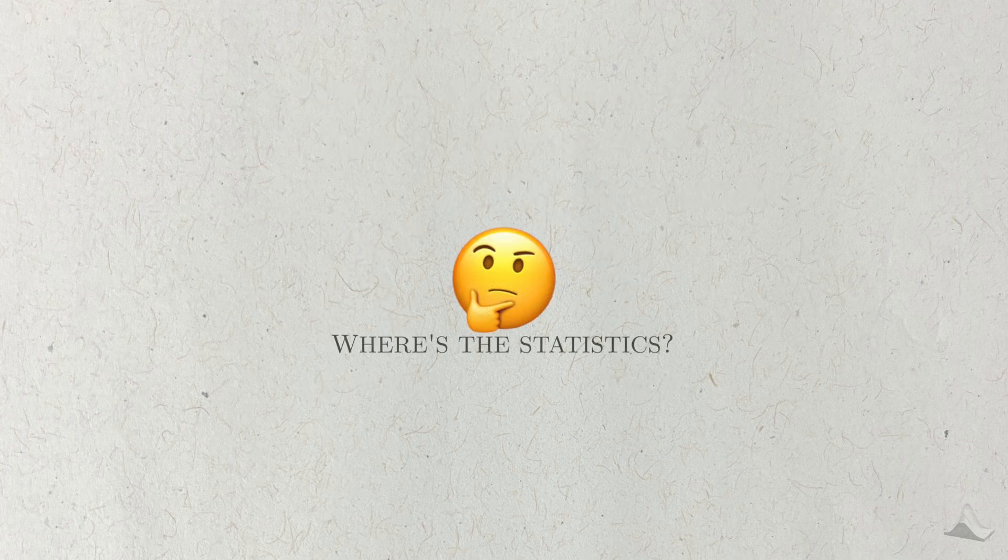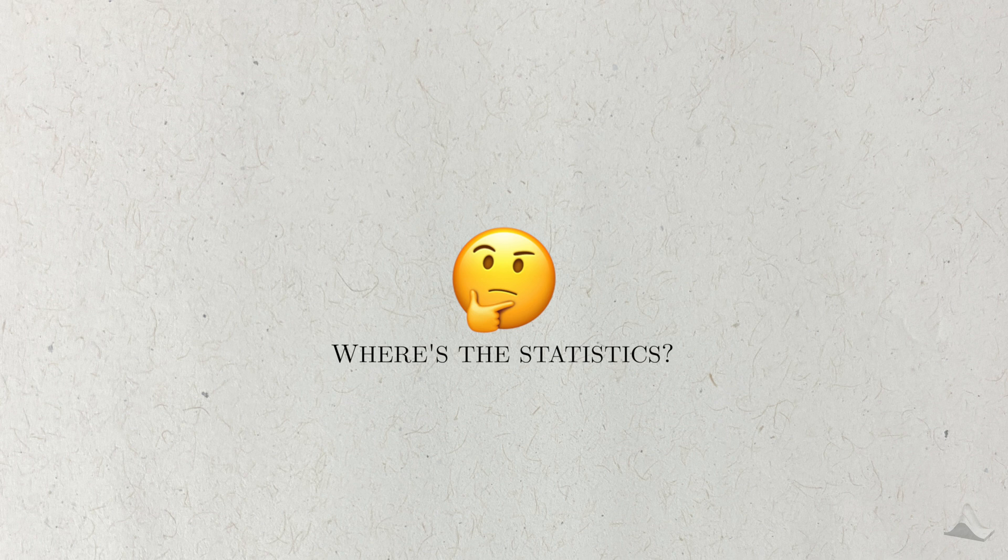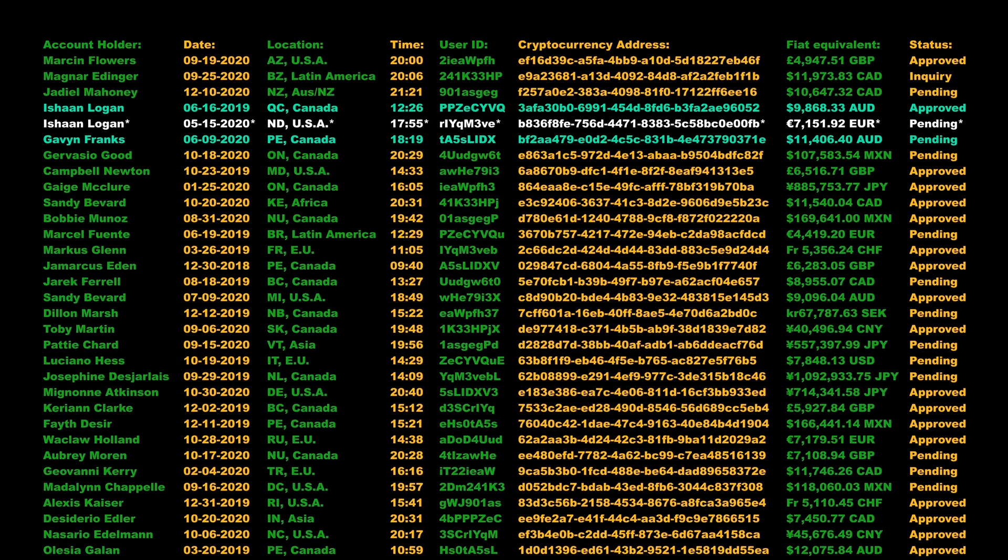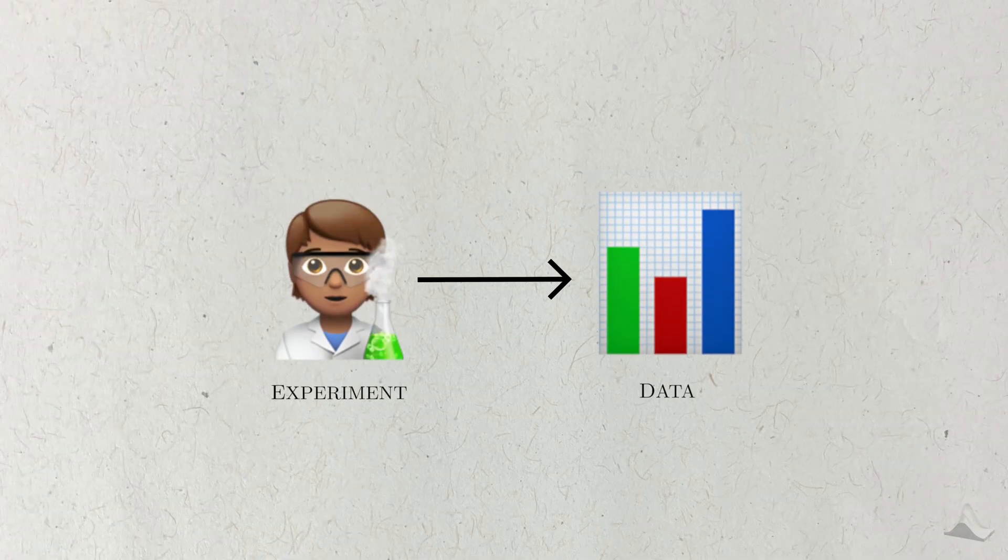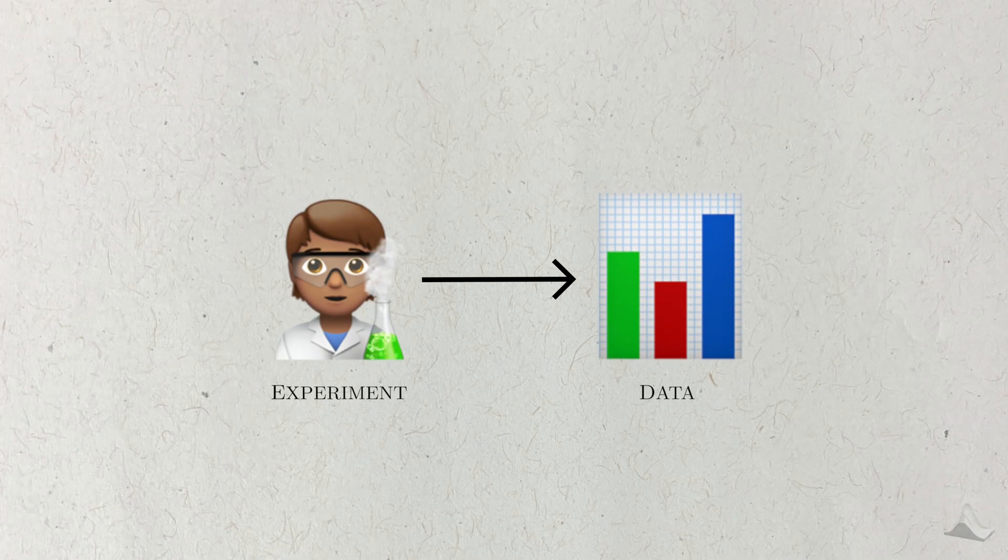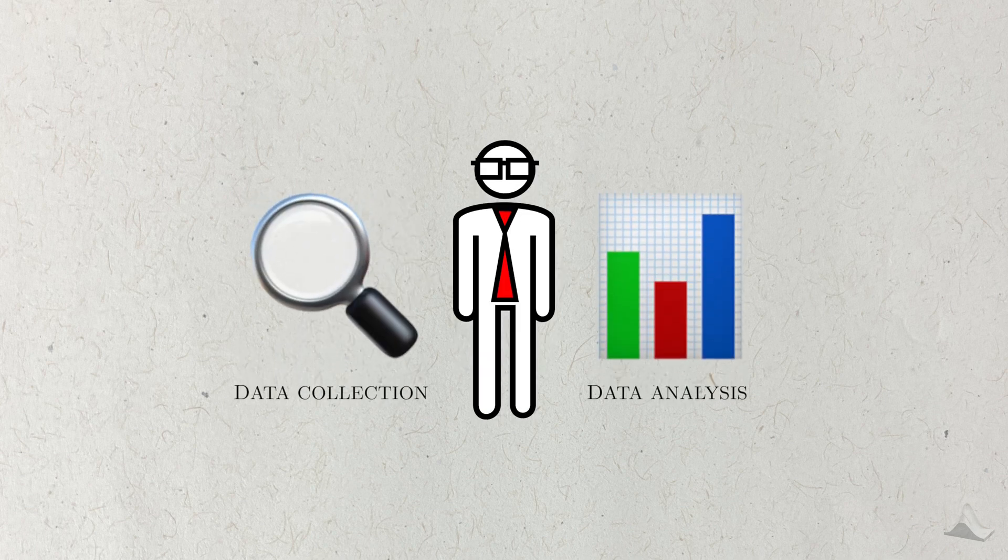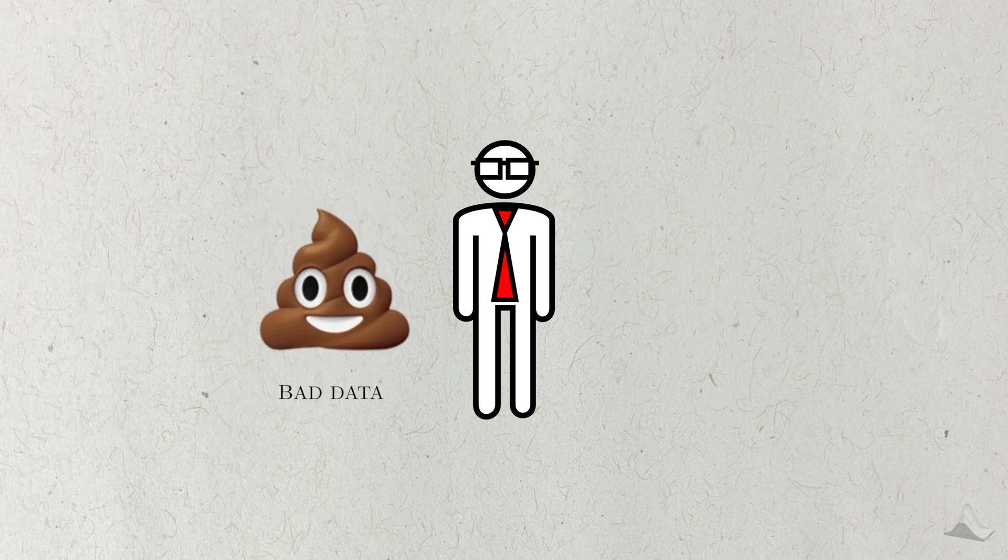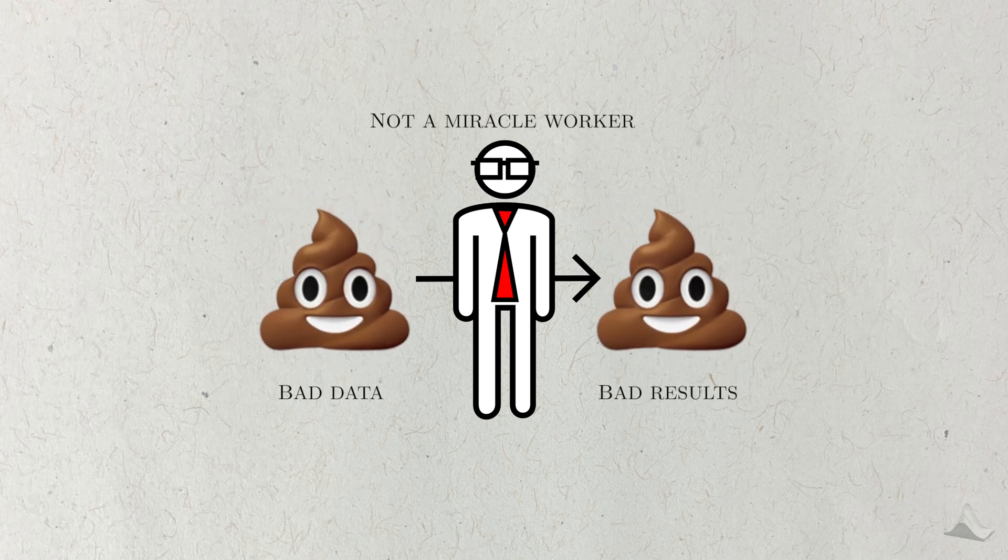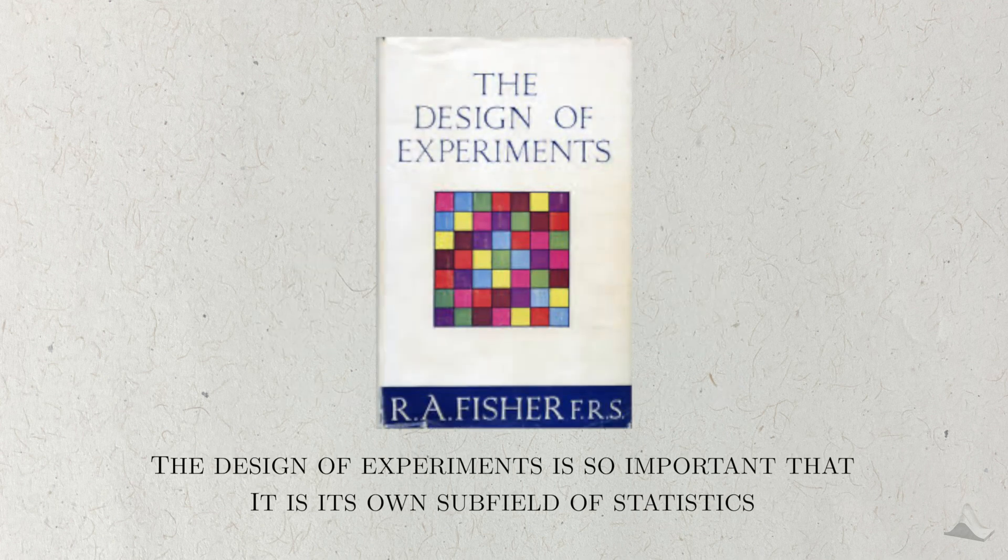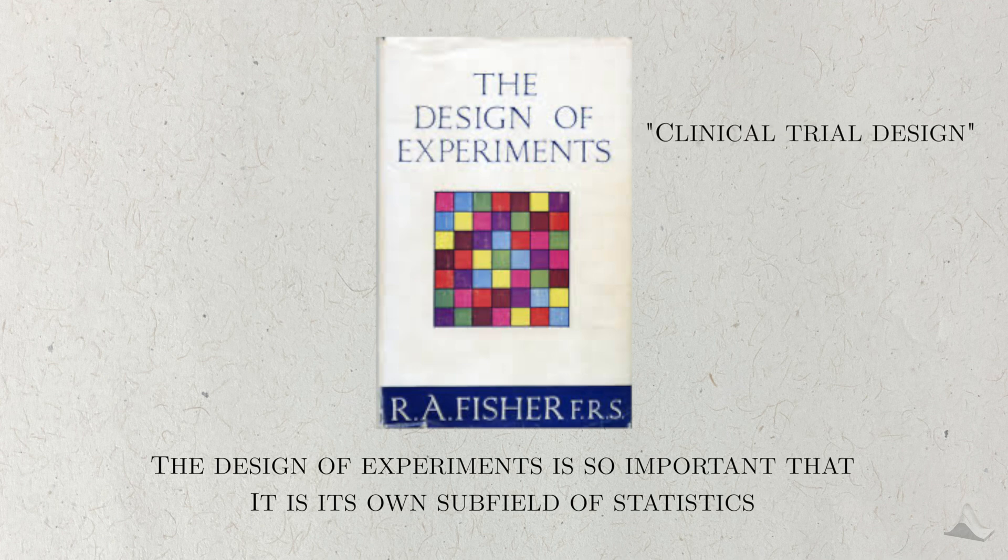Some of you may have noticed that I didn't mention statistics at all when defining a clinical trial. Clinical trials are just experiments, so why do statisticians matter there? The answer is data. All experiments produce data, and you need good statistics to make the best use out of this data. Not just in the analysis of the data, but in planning how we gather it in the first place. If a clinical trial is poorly planned, then no amount of fancy analysis is going to convince the FDA that your drug is safe to consume. In fact, the planning of experiments is so important that it constitutes its own subfield of statistics, called experimental design. Or clinical trial design, depending on who you ask.